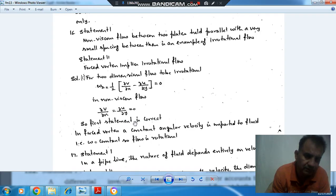The first statement is correct. Now for the second statement, forced vortex implies irrotational flow. For a forced vortex, constant angular velocity is imparted to the flow, so omega is constant. Since omega is present, the flow is rotational, not irrotational. So that statement is wrong, and the answer is option C.